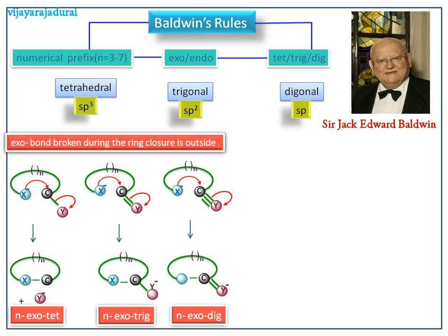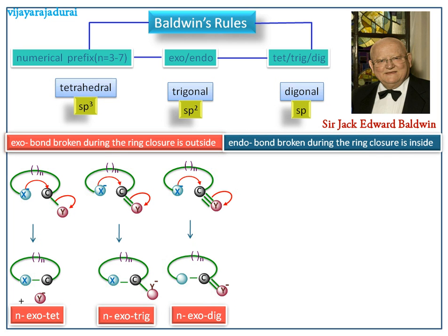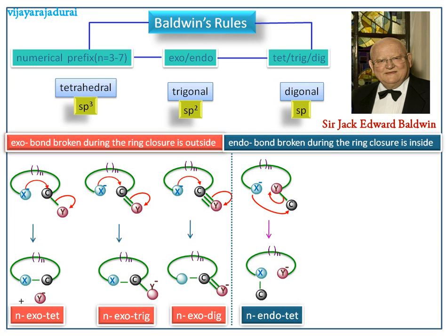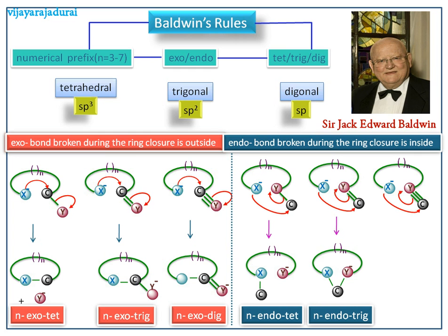Next, we discuss the endo type — endo means the bond broken during the ring closure is inside. Here the nucleophile attacks the electrophilic carbon, and we can see the bond broken is inside during the ring closure. This is called N-endo-tet. Similarly, we observe endo ring closure in the trig type and dig type.